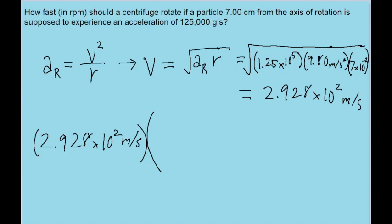And first, let's convert from meters to revolutions. So 1 revolution is equal to 2 pi times the radius of the motion, so 7 times 10 to the power of negative 2 meters. This is because 1 revolution is a full cycle around, and the circumference of a circle is 2 pi r. So this formula will convert from meters, this conversion right here will convert from meters to revolutions.